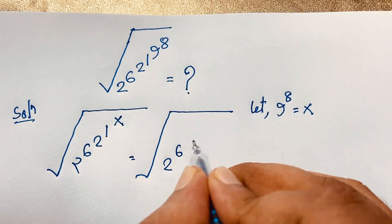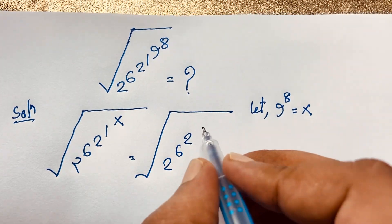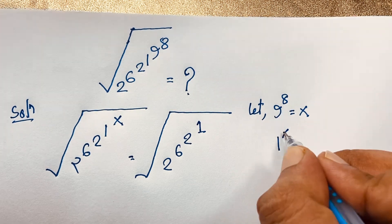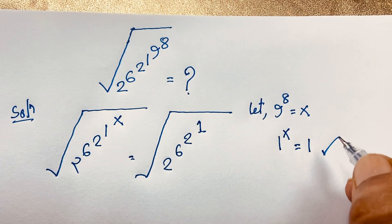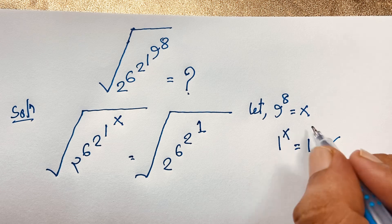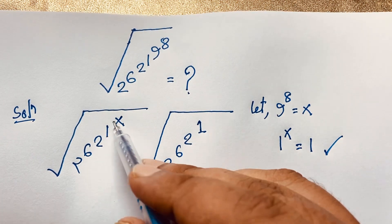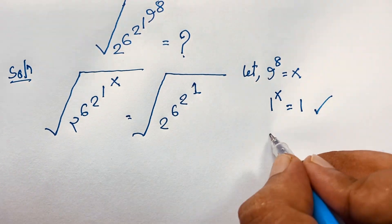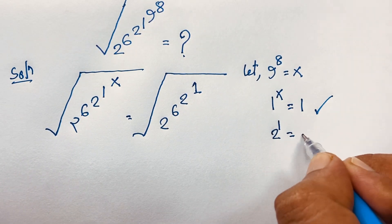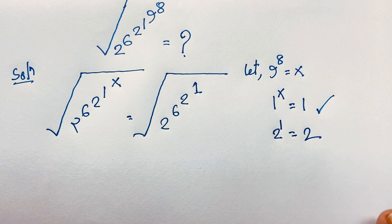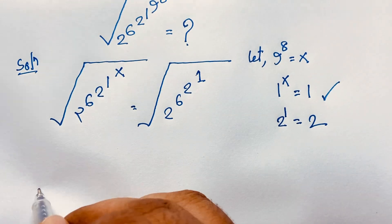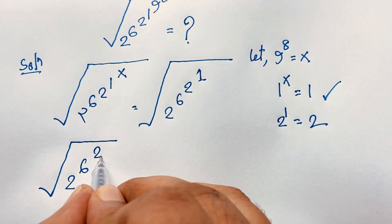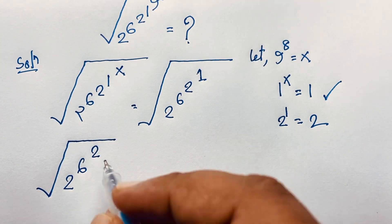Now at this moment, if I evaluate this expression, it will be 2 to the power 6 and 2 to the power — this is 1, because 1 to the power x is always 1. How? 1 to the power any number will be 1. So 1 to the power x equals 1. Now here 2 to the power 1 will be 2. So the expression becomes: square root of 2 to the power 6 times 6 to the power 2 times 2.